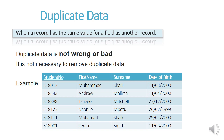Duplicate data is when a record has the same value for a field as another record. Duplicate data is not wrong or bad, and it's not necessary to remove it. For example, the surname Shaik is repeated twice just because it happens to be two people's names — that's not wrong. Similarly, a date of birth like 11-03-2000 repeated twice is also not incorrect; it just happens to be those two people's dates of birth.